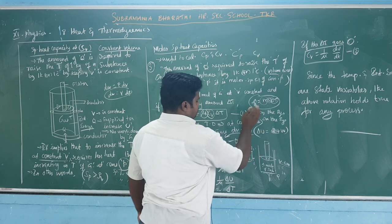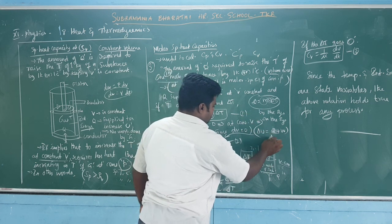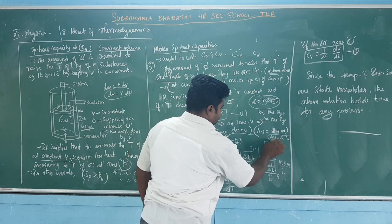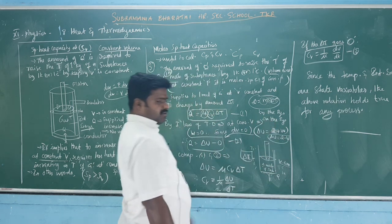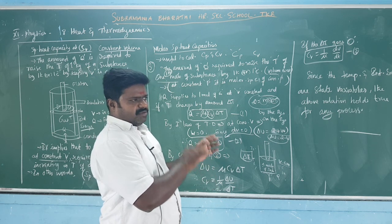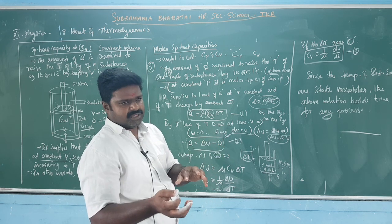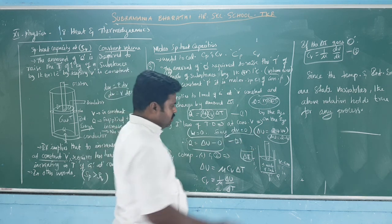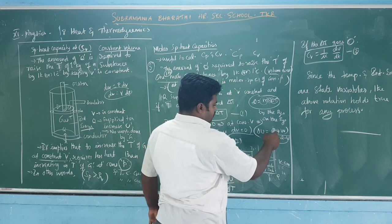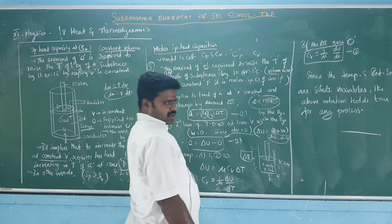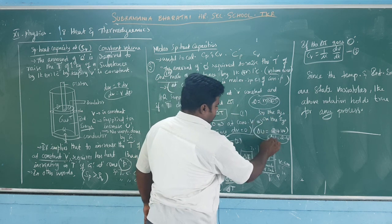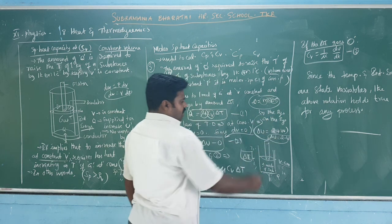By the first law: change in internal energy equals Q minus W. That means change in internal energy equals given heat plus work done. What we have learned is that by the system this formula applies, and on the system this formula applies.